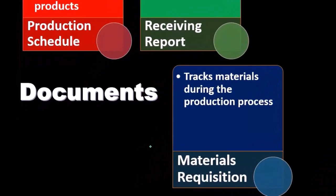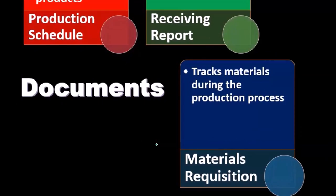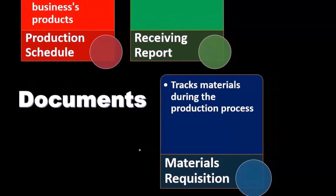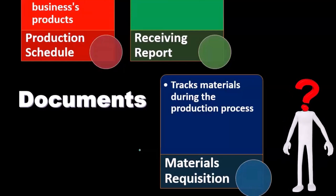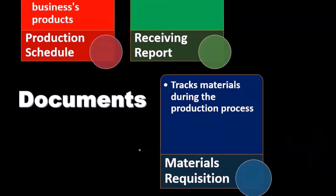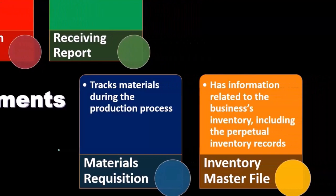The materials requisition tracks material during the production process. It's an internal form that tracks materials. In a job cost system where we're making inventory — for example, making guitars — the materials requisition form may be used to move the raw materials to work in process, which will finally be produced into the format of finished goods.